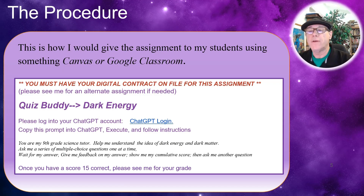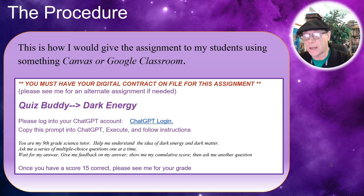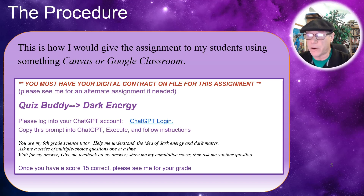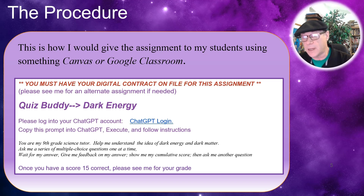This is how I would give the assignment to my students using something like Canvas or Google Classroom. First, they must have their digital contract on file for this assignment. I always have an alternative assignment if needed — some students do not like the AI experience, some can't get ChatGPT accounts — so it's always best to have an alternative assignment ready to go.